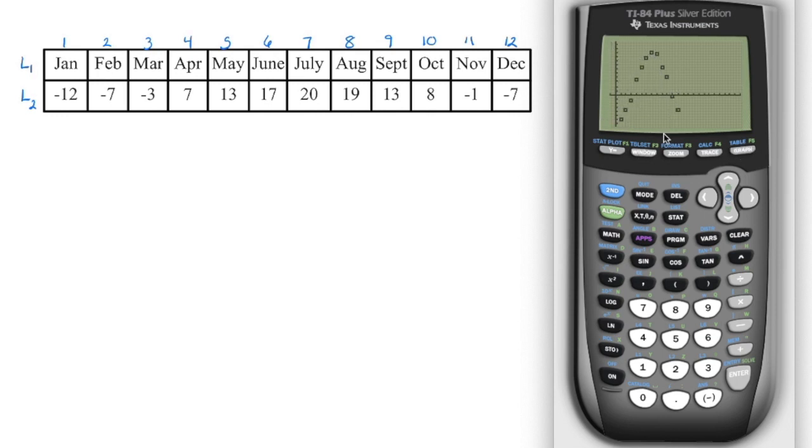Now this is only graphed one cycle because if we go into the data here, we entered our data into list one and list two. I only entered for the one year. And then we've got our data points there.